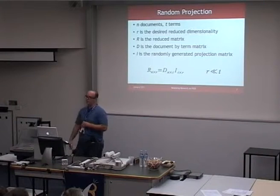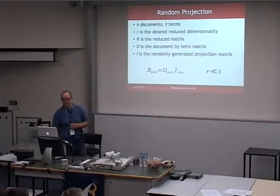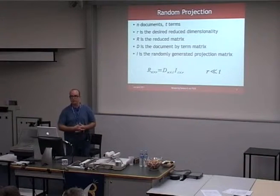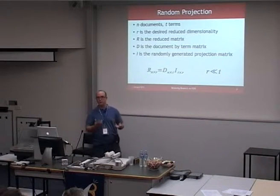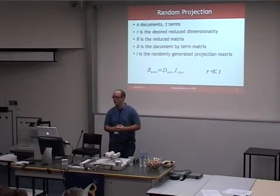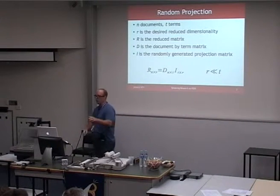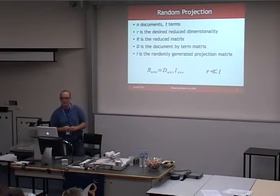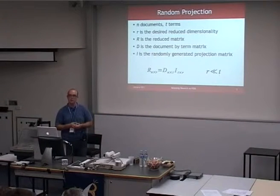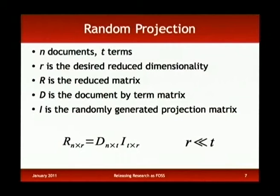In this case, you'd have N documents with, say, a million terms, and you want to project that down to a thousand variables that explain what's going on. R is the matrix — that's the product — so you still have each document represented as a row, but now it's in the reduced dimensionality space.